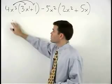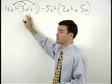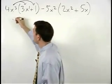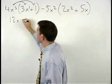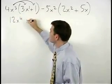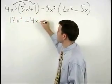Multiplying our coefficients and adding the exponents, we have 12x⁴ + 4x³.